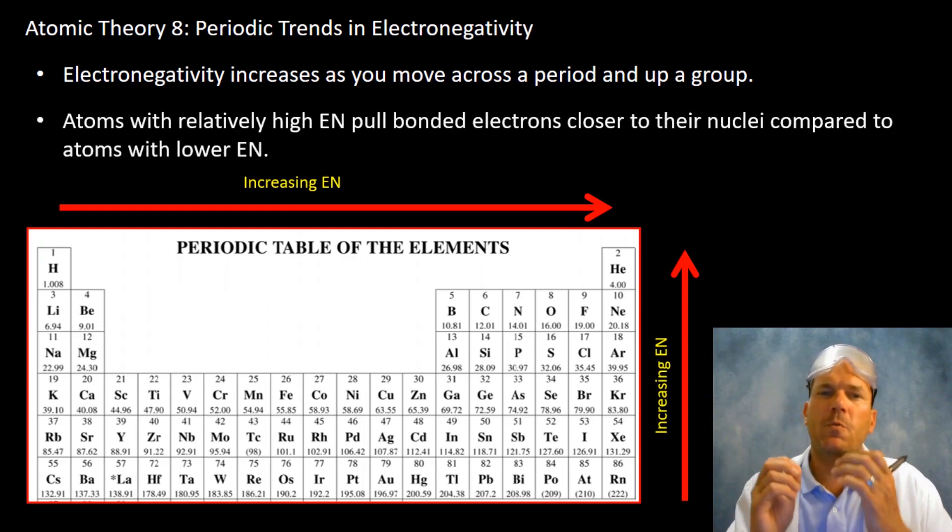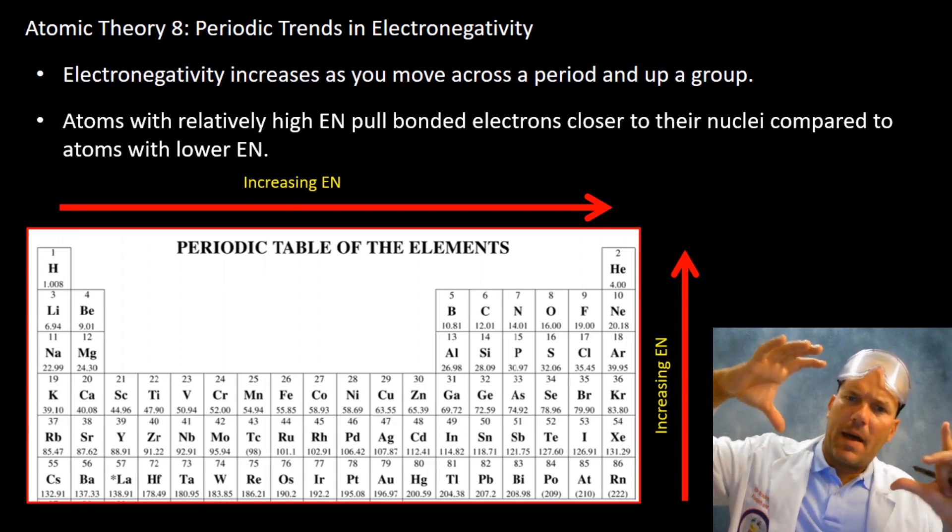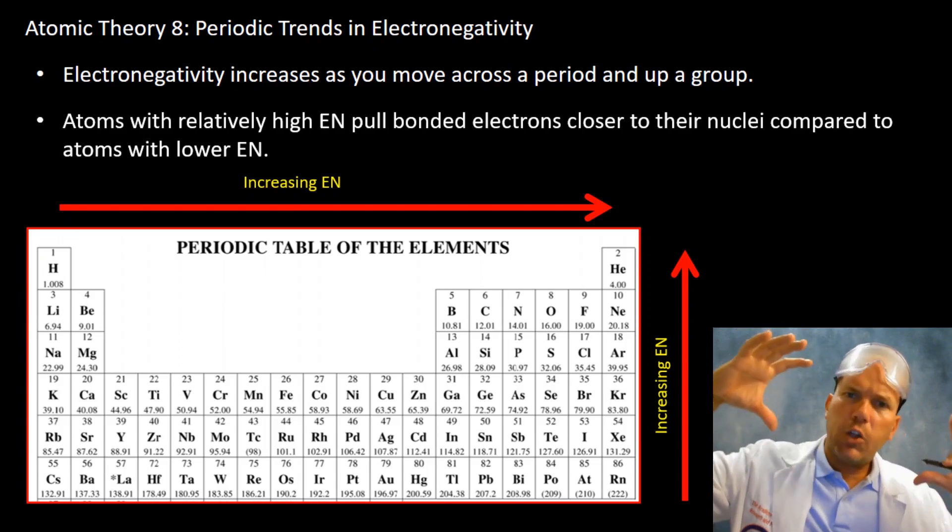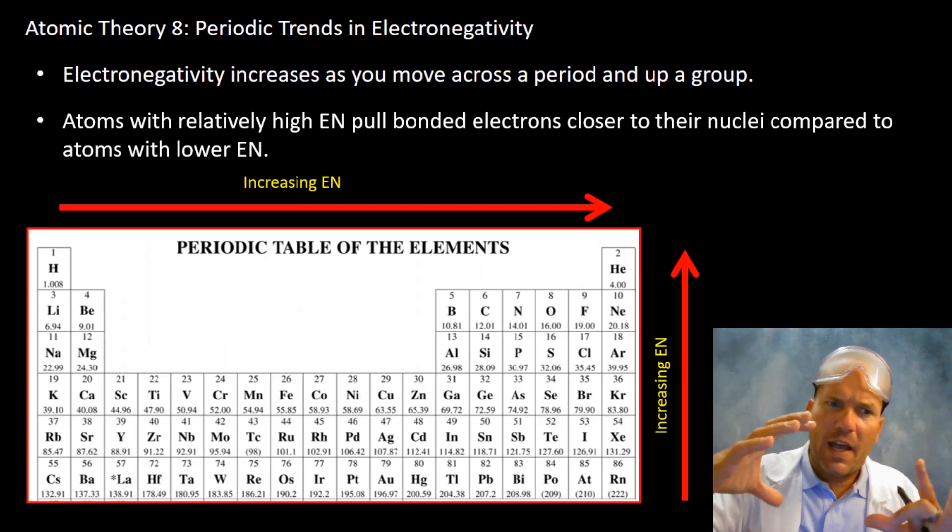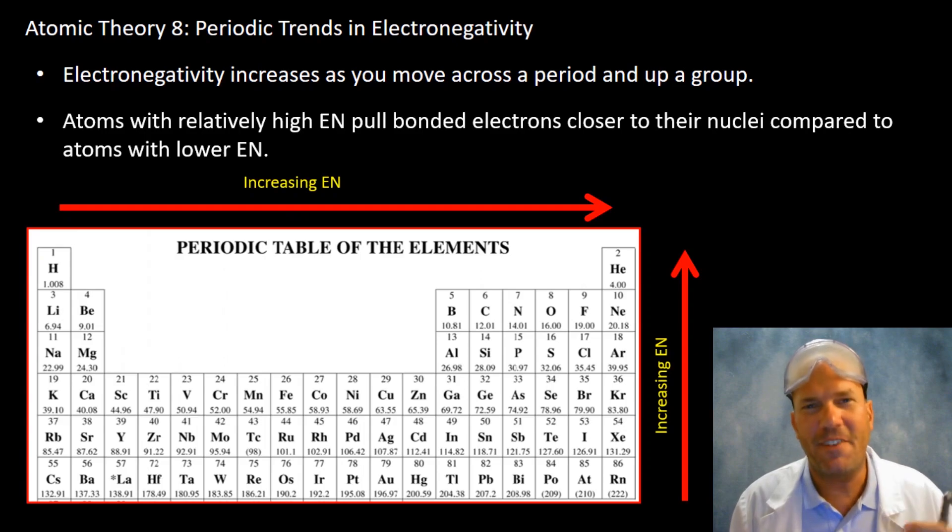Atoms with relatively high electronegativity like fluorine are able to pull in their bonded electrons closer to their nucleus, closer to those protons, when compared to atoms that have lower electronegativities. So you're probably seeing there's a relationship between the electronegativities and the topic of the last video on atomic radii.